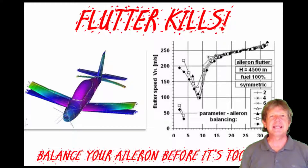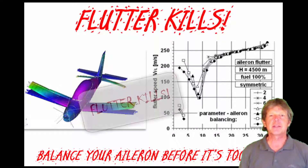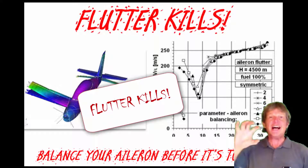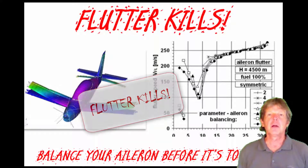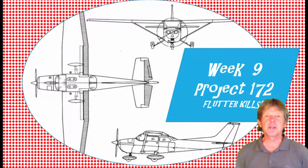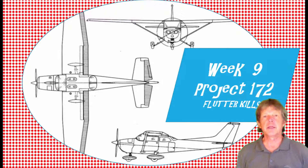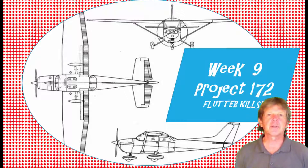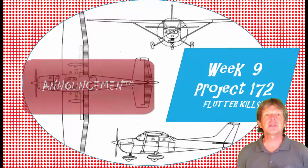Wow, it's week nine already for AMT-155 assembly and rigging. And this week we got a big one — it's flutter kills. So this week we're going to talk about aircraft flutter. As mechanics, as technicians, one of the things we do to reduce the chance of flutter is we do rigging of flight controls, we do control cable tensions, and we also do balancing of flight controls. That's what we're talking about this chapter.